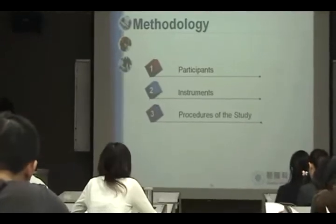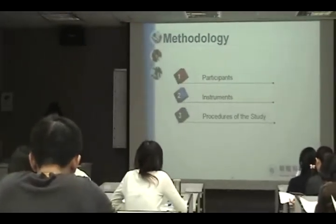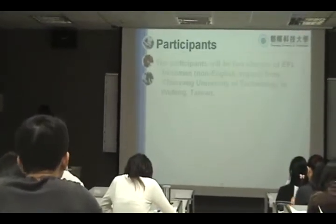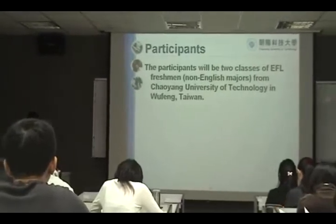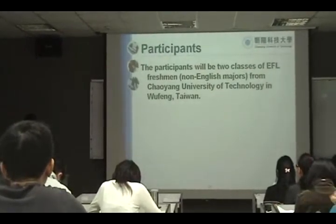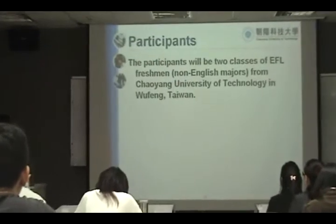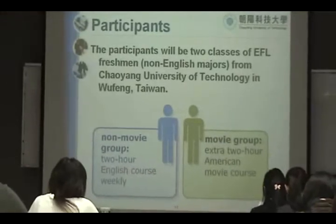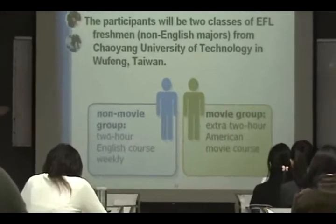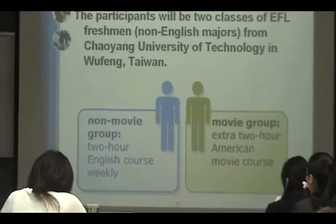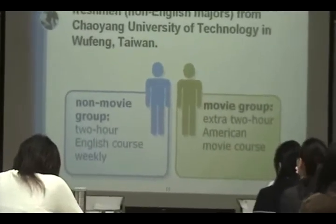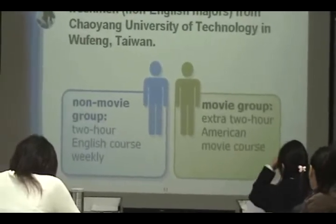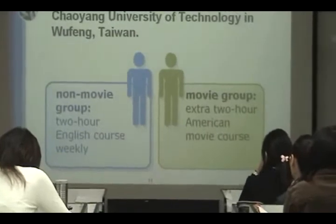Methodology includes participants, instruments, and the procedure of the study. The participants will be two classes of EFL freshman non-English majors from Chaoyang University of Technology in Wufeng, Taiwan. These two classes will be divided into two groups: a non-movie group and a movie group. Both groups take a two-hour English course weekly, but the movie group takes an extra two-hour American movie course weekly for one semester.